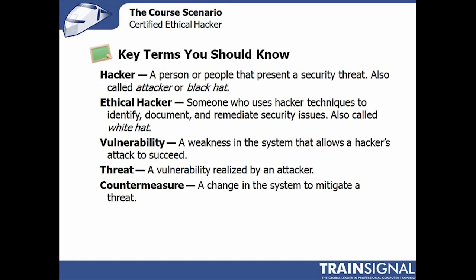A threat is something an attacker realizes. When a vulnerability becomes a threat, it's because it's actually being manipulated by an attacker. A countermeasure is something that gets changed to mitigate a threat. Threat and countermeasure go very closely together — what are the vulnerabilities being realized, and what is being done about those threats to minimize or remove them?